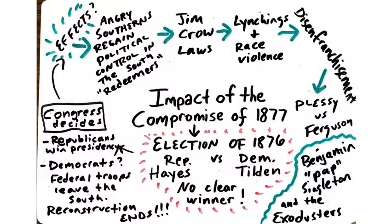The Compromise of 1877 has to do with the events following the American Civil War. The South had been defeated and was now occupied by federal troops to make sure they abided by the new laws and amendments passed by Congress, such as the 13th, 14th, and 15th amendments, and to protect African Americans who were citizens and had been emancipated from slavery. Southerners were very resentful of losing the war and of African Americans having the same rights as white Southerners.